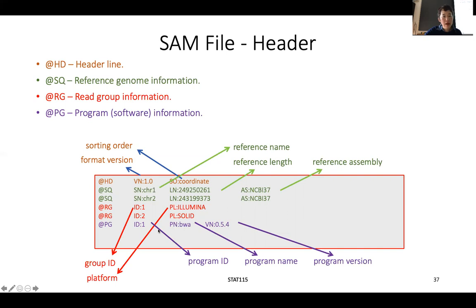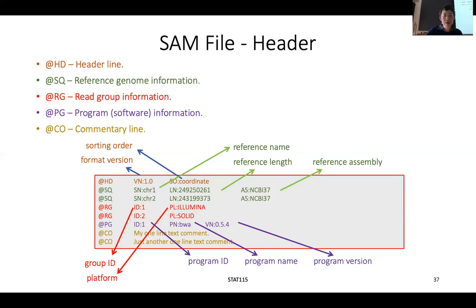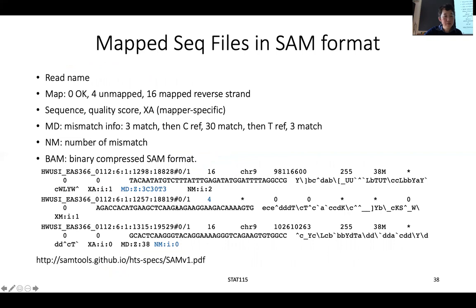The header also tells you, for example, that you used BWA and what version was used to get the final sequence alignment. In all SAM files at the very top, you will get this information: what machine sequenced the data, what program was used for alignment, what version of the human genome you aligned to, and how many chromosomes are in this genome.